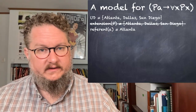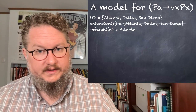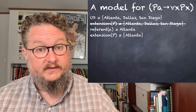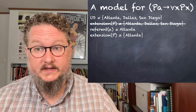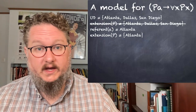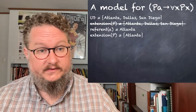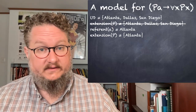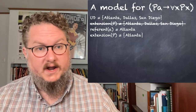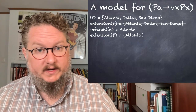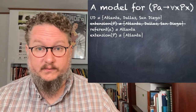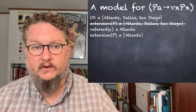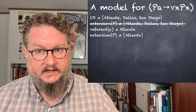Let's consider replacing this model with a smaller extension for P — just containing Atlanta. Now PA is still true, Atlanta is still in the extension of P, but ∀x Px is false because Dallas and San Diego are not in the extension of P. The antecedent is true but the consequent is false, making the sentence false according to our basic semantics for the conditional.